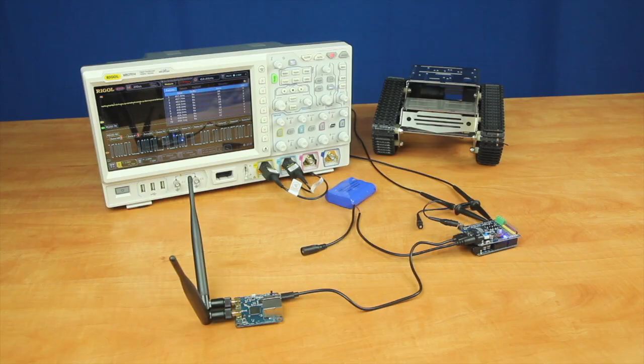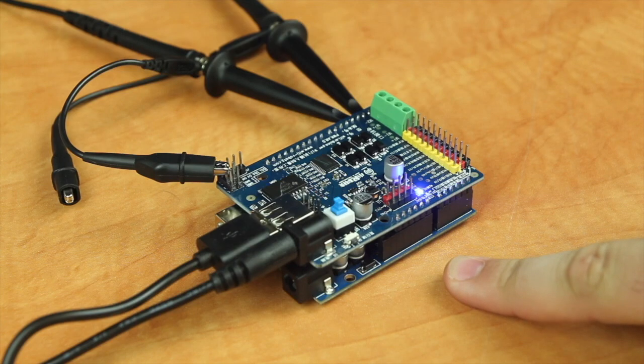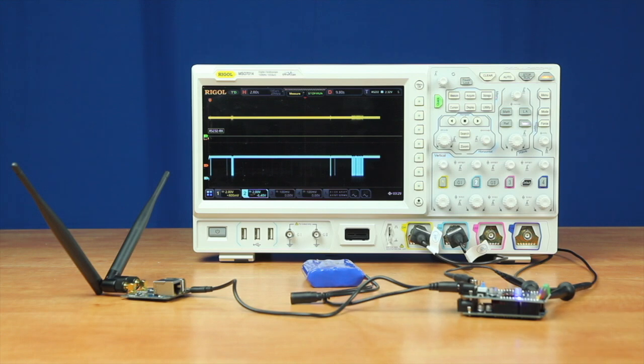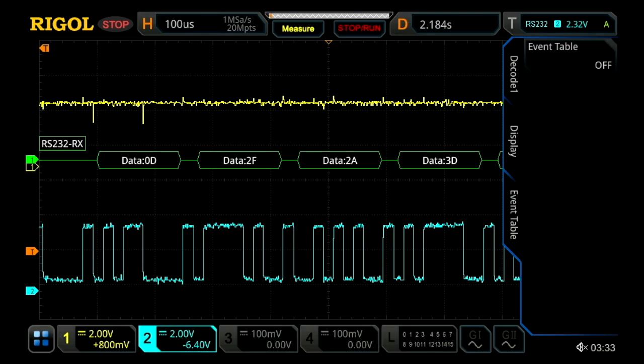To begin with, we started with testing our robot's serial communication between its Wi-Fi board and the controller board. To perform this test we used an oscilloscope with serial decode capabilities and two analog passive probes.